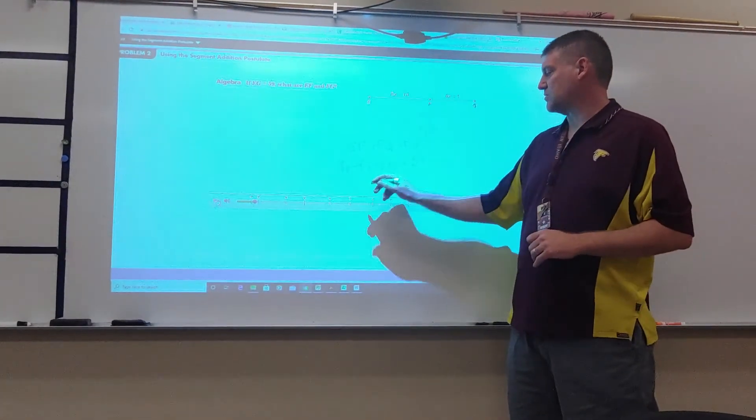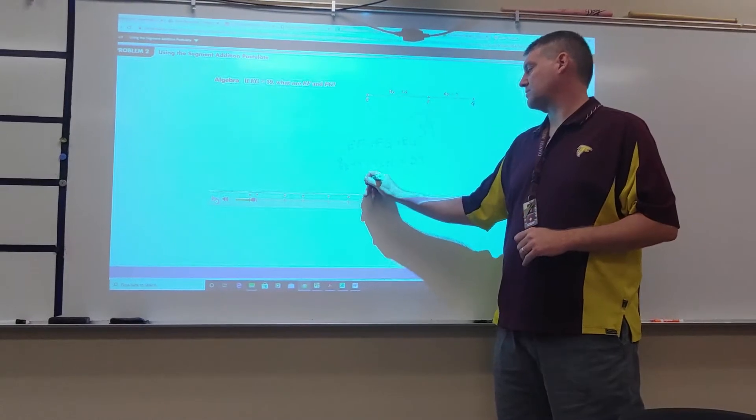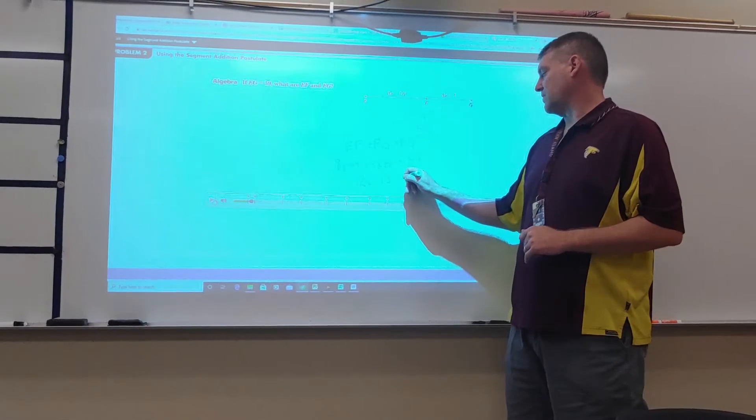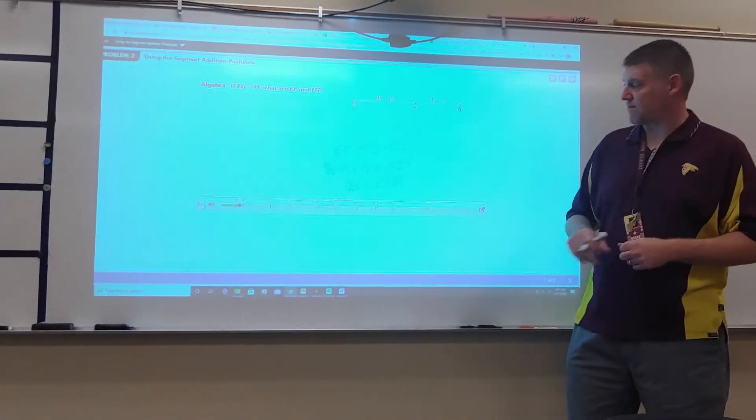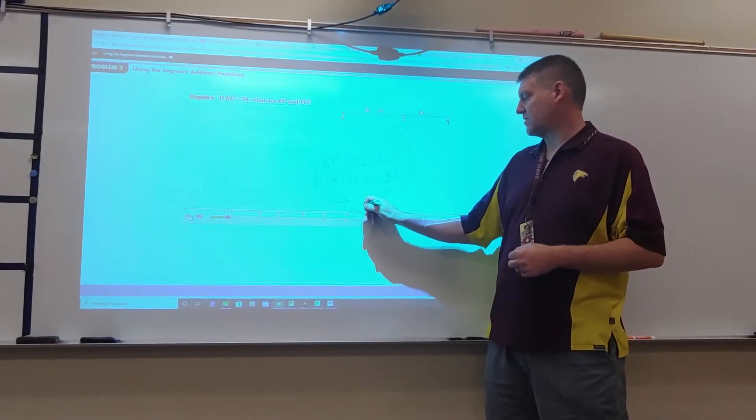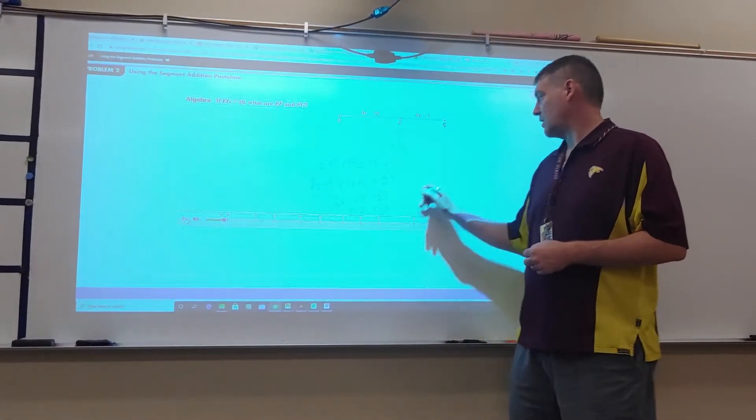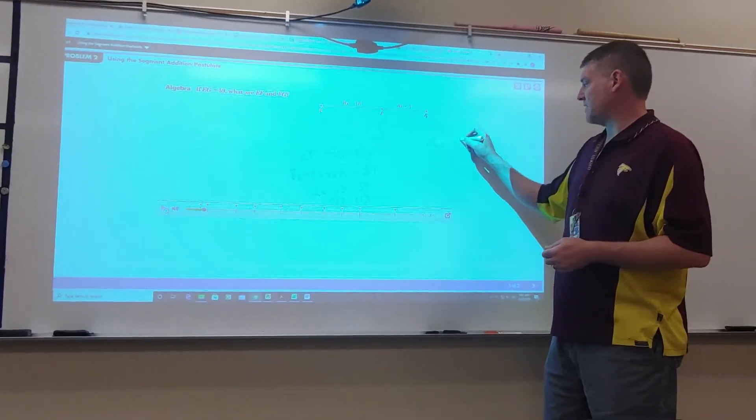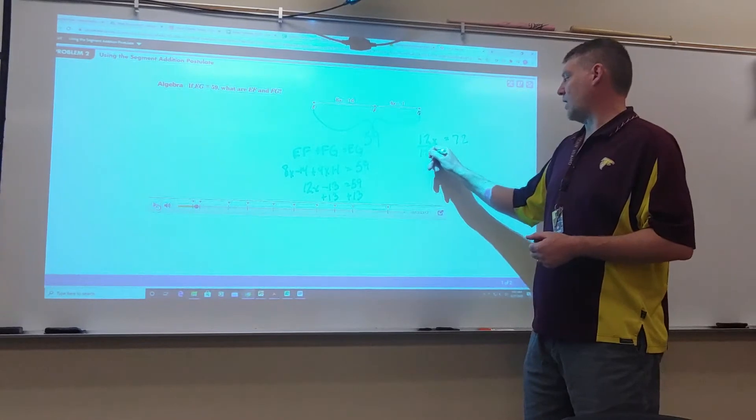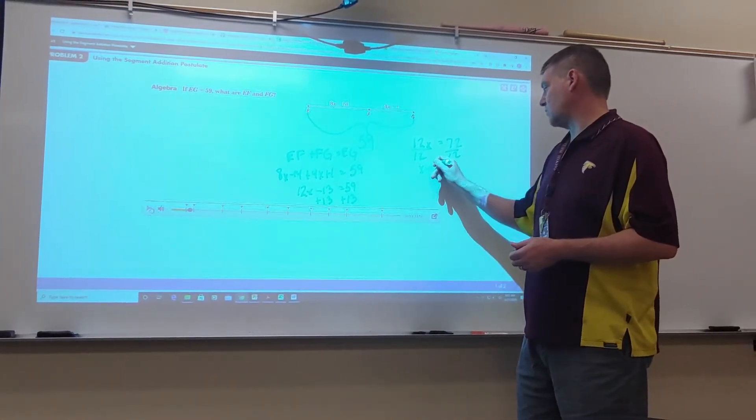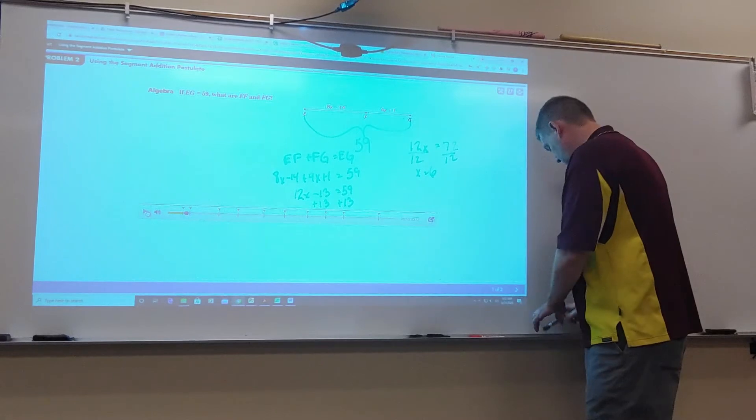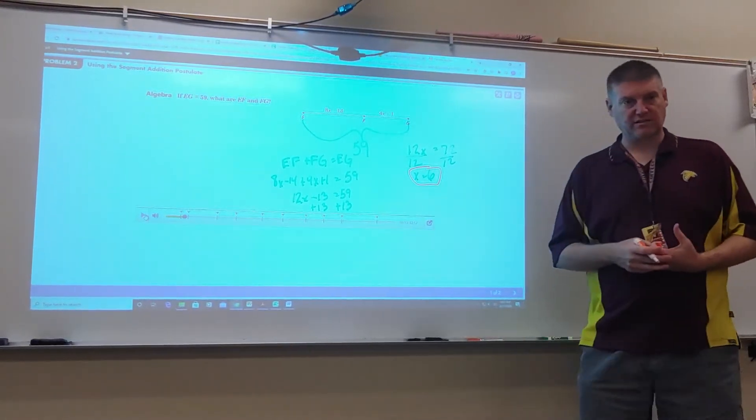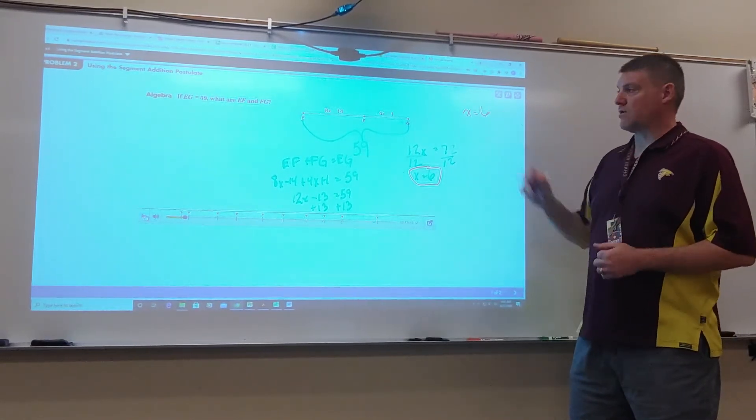8X plus 4X gives me 12X. Negative 14 plus 1 is negative 13 equals 59. I'm going to isolate my variable. I'm going to add 13. I'm going to end up with 12X equals 72. I'm going to divide by 12, and I get X equals 6. Well, this is nice that X equals 6, but that's not what it asked for.